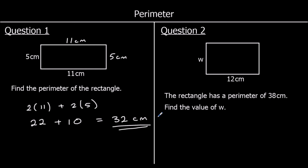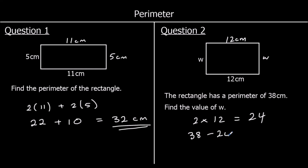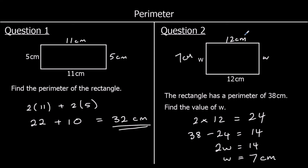Question two: the rectangle has a perimeter of 38 centimeters. What is W? We've got two twelves and two W's, and they all add up to 38. Two twelves are 24. So 38 take away 24 is 14. So two W's must add up to 14. Half of 14 is seven. So each W must be seven. Seven plus twelve plus seven plus twelve equals 38. So W must be seven centimeters.